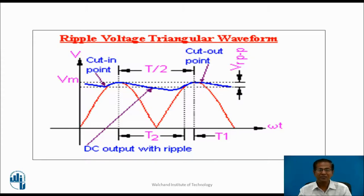Immediately, capacitor C gets charged completely up to its peak input value. As a result, the ripples are in the form of a triangular wave. In this waveform, T/2 represents the half time period. T1 represents the charging time of the capacitor, during which diode D conducts. T2 represents the discharging time of the capacitor, and VR peak-to-peak is the peak-to-peak value of the ripple voltage.